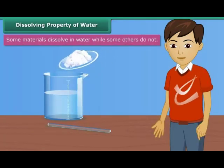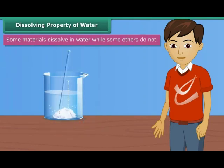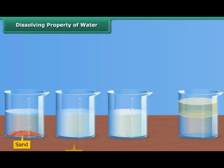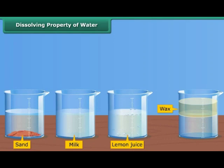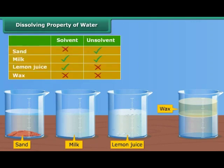Water is a universal solvent. It dissolves many things. But there are certain items that do not dissolve in water. Collect sand, milk, lemon juice and wax. Also take some sugar and salt. Try to dissolve these materials in water separately. Make a table of your observations and compare your observation table with the table shown on screen.